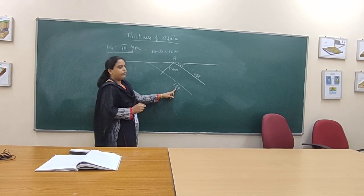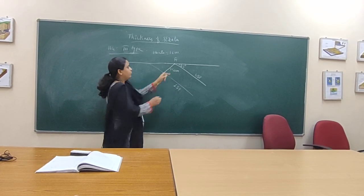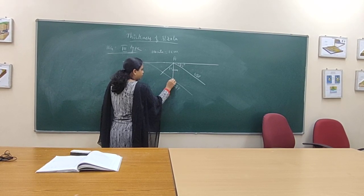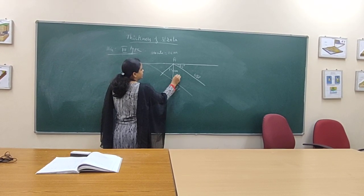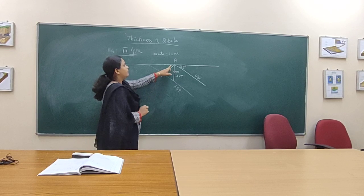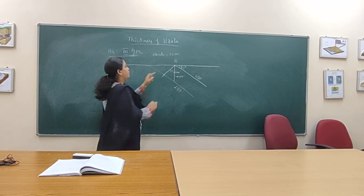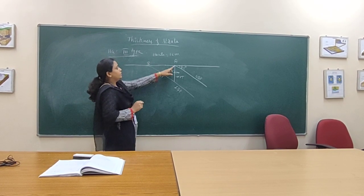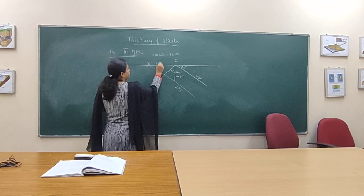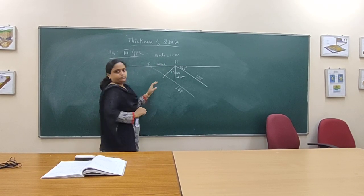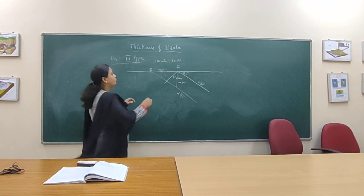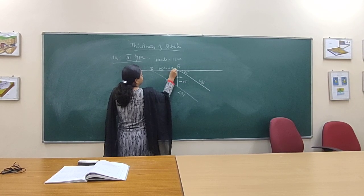If you consider the lower bedding line, you will get this line. From point A, put one vertical or perpendicular line — this line is called the vertical thickness. This distance you have to calculate. Then, if you consider point A and point B, the distance in between A and B is the width of outcrop. The width of outcrop answer is 4.75 centimeters.